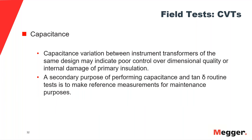Finally, we measure the capacitance of the elements in the voltage divider. Any variation between all those elements within one CVT will indicate either internal damage to the primary insulation or a defect from fabrication or poor quality control during manufacturing of the individual elements. Just as with tan delta, reference measurements for capacitance are recommended.